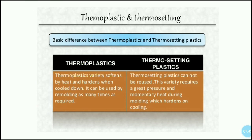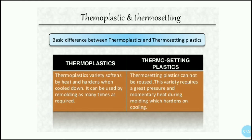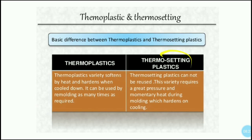Thermosetting plastics, on the other hand, cannot be reused. This variety requires great pressure and momentary heat during molding, which causes it to harden permanently on cooling. Once the shape is set, it cannot be remelted, recycled, or reused. Thermoplastic, by contrast, can be melted and reshaped repeatedly.